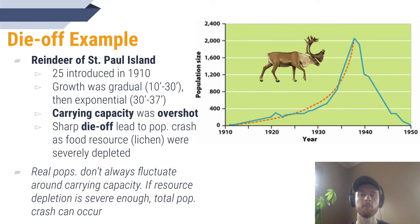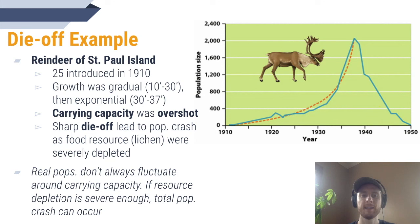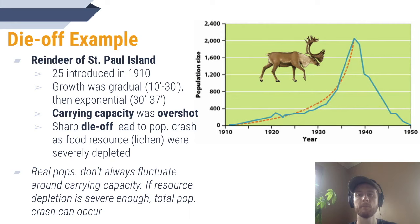Here we have an example of a more intense die-off that resulted in a population crash. Reindeer are large herbivores who need to eat a lot of vegetation in order to survive, and in the winter when vegetation is scarce, lichen are a very valuable food source because they still grow during the cold winter months. In 1910, a small herd of 25 reindeer were introduced to St. Paul Island. At first there was plenty of vegetation and the population grew gradually from about 1910 to 1930. But then, as the population got larger, it started to grow exponentially — growth is very rapid from 1930 to 1937. While we can't tell exactly from this graph what the carrying capacity is, it's safe to assume that the reindeer seriously overshot their carrying capacity.